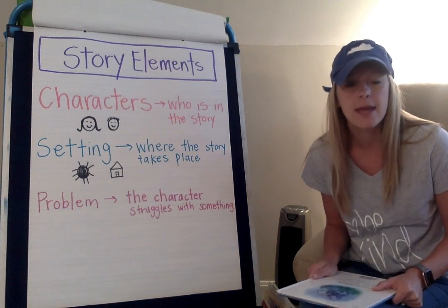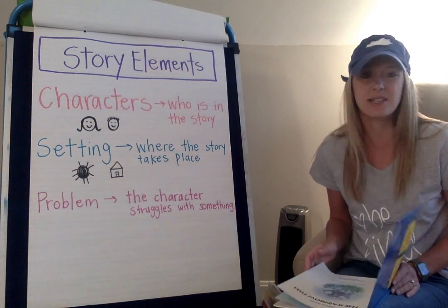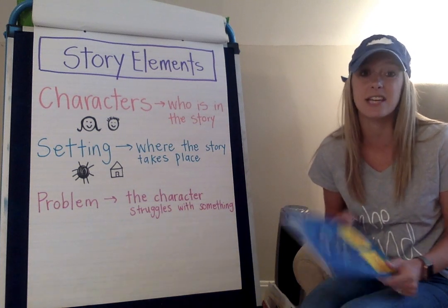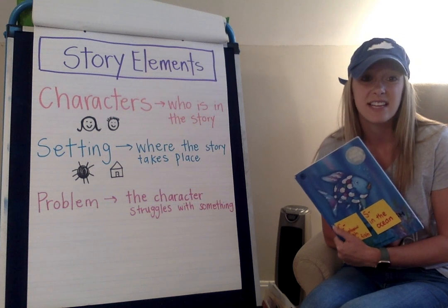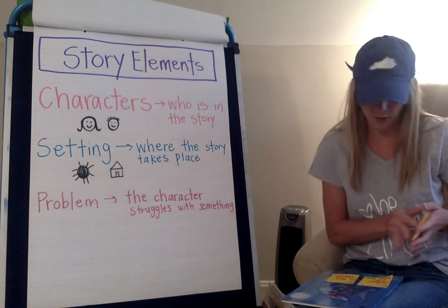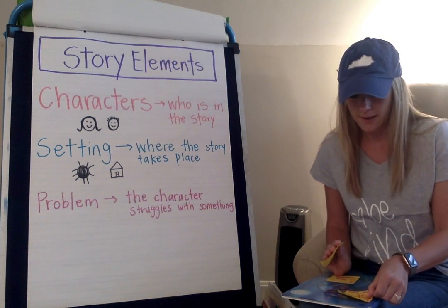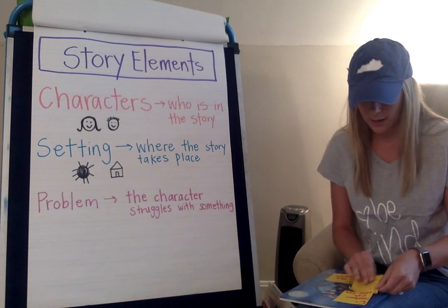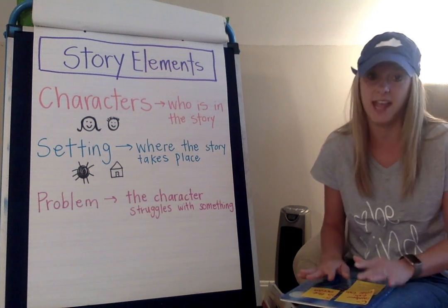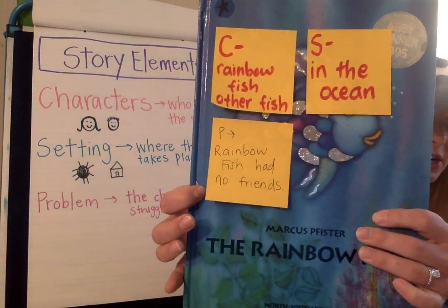What's the problem in the story? I know that she doesn't want to give away her fins, but I think the real problem here is that she doesn't have any friends. Isn't she longing for some friends? So I'm going to take a post-it note. This time I'm going to put P for problem, and I'm going to write: Rainbow Fish had no friends. That's the problem. Here's my post-it note right here on my book.